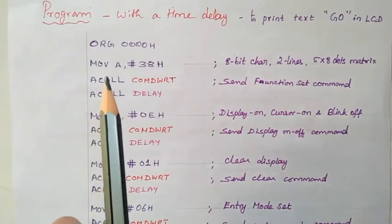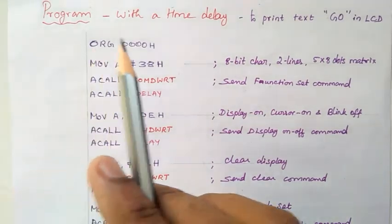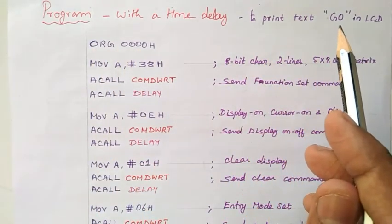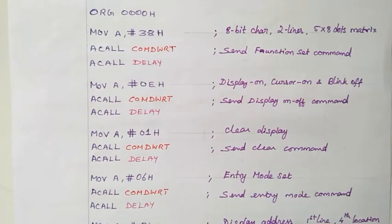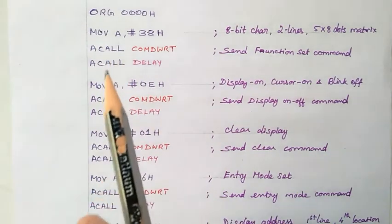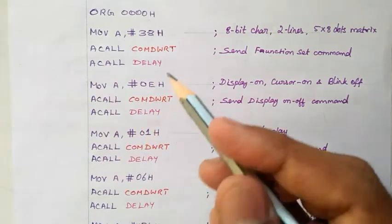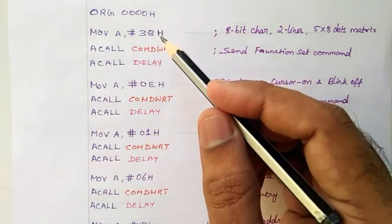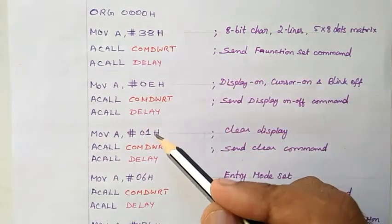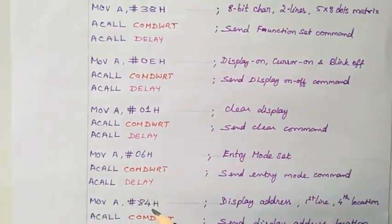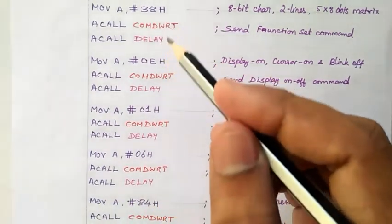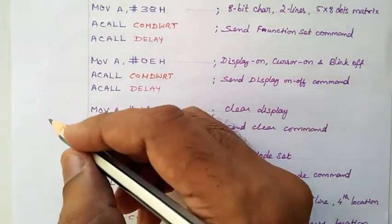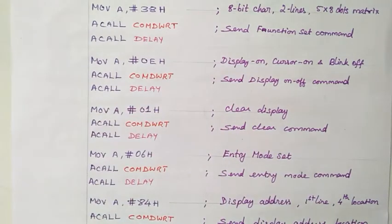Next we see how to write a program for printing the text 'GO'. There are two characters to print. For that, we have to write the initialization code first. The codes 0x38, 0x0E, 0x01, 0x06, and 0x84 are called initialization codes. Before using the LCD, we have to make it ready to receive bytes and display properly. Hence we have some LCD command codes.